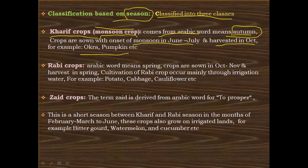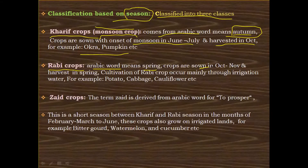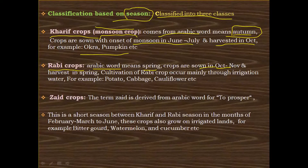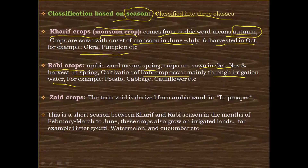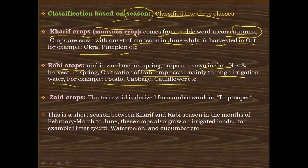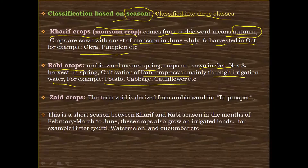The next one is Rabi crops. The word Rabi comes from an Arabic word meaning spring. These crops are sown in October and November and are harvested in spring. They are known as Rabi crops because they are harvested in spring. These crops are cultivated mainly through irrigation water since the monsoon season has already ended. For example, potato, cabbage, and cauliflower.